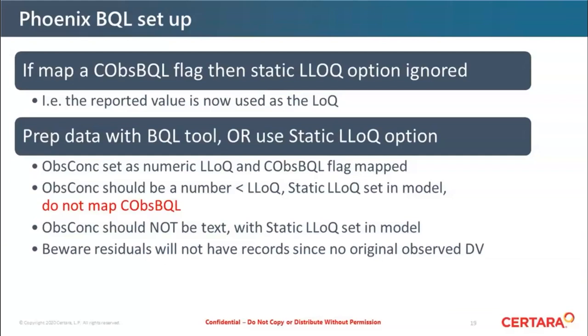So roundup, if you want to use the Phoenix BQL setup, you've got two options sitting in the data or sitting in the model. So if you map the COBS BQL flag, that will take precedence of the static LLOQ option in the model. So then the reported value is now used as the LOQ and that means you can have a varying LOQ and that makes the typical assumptions you would make of this M3 method potentially invalid. So if you're going to set it within the model, don't map the flag. So either prep the data with the BQL tool or use the static LLOQ option within the NLME engine. The observed concentration should be a numeric value and the COBS BQL flag would be mapped.